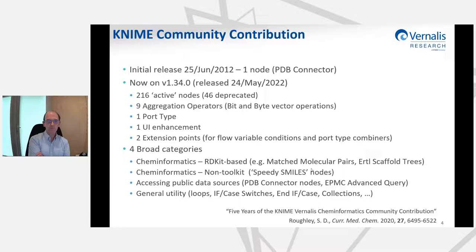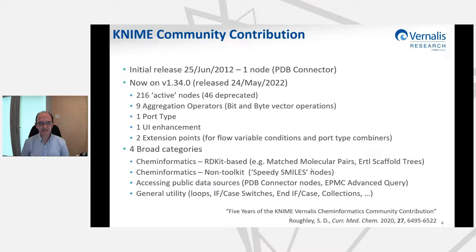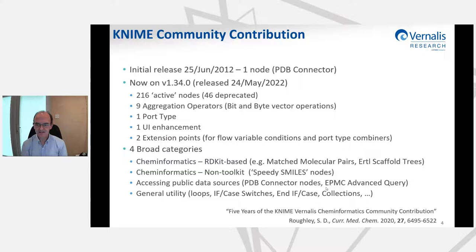Our nodes fall into four broad categories. First, RDKit-based cheminformatics — for example, matched molecular pairs nodes and our URTL scaffold trees implementation. Second, non-toolkit cheminformatics, mainly our Speedy SMILES nodes, designed to operate on raw SMILES string representations for very quick processing of large datasets as a pre-processing step. Third, nodes for accessing public data sources such as the PDB connector and our European PubMed Central advanced query node. Fourth, general utility nodes — loops, flow control, and collection processing nodes.